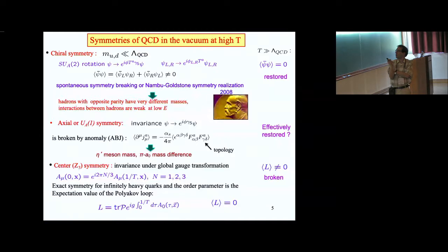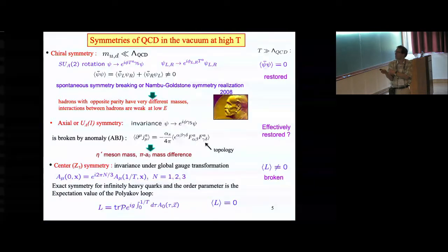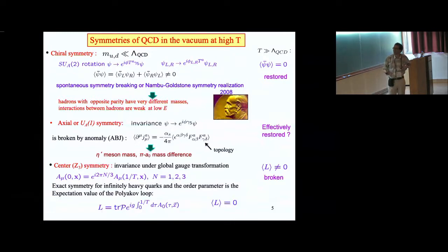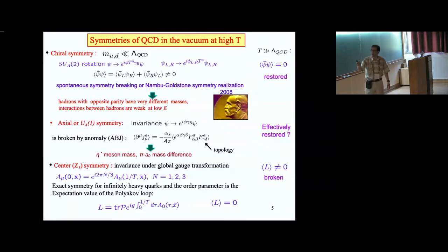There is a typo in the notation — there should be no A in the current J_mu; it should just be J_mu. I'll fix it before posting the lectures. I probably meant it to be axial, and used A for the color label, which created confusion. I should define what J_mu is properly.